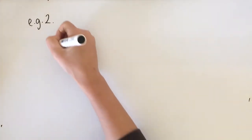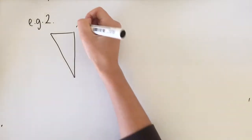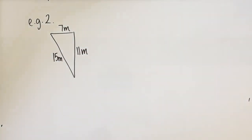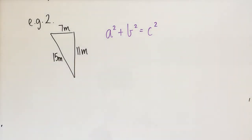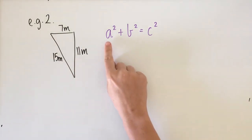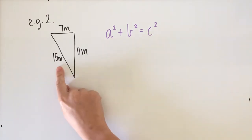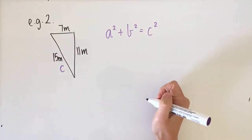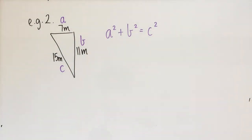Now we'll move on to our second example. This time we've got a triangle with dimensions 7 metres, 11 metres, and 15 metres. The first thing we do is write down the formula: a squared plus b squared equals c squared — you should write down your formula every time. Next, label the sides: c is the hypotenuse and the longest side, so 15 is c. A and b are the short sides; it doesn't matter which is which.